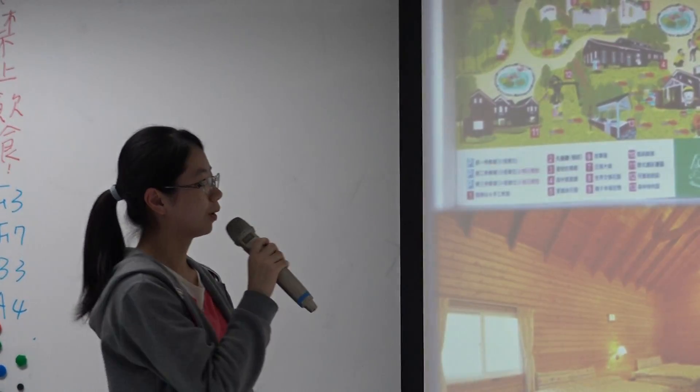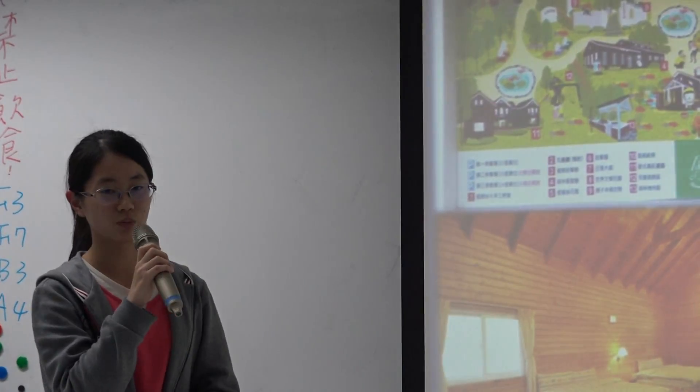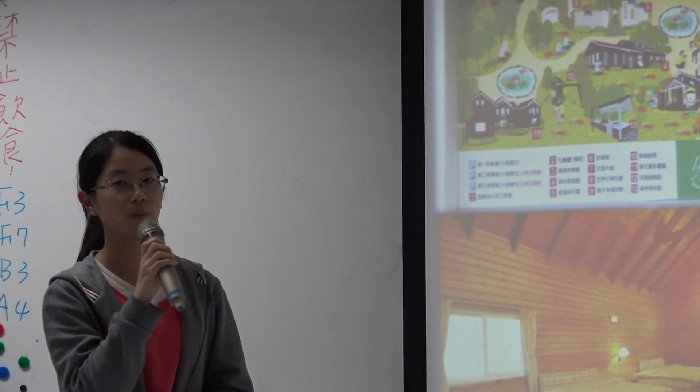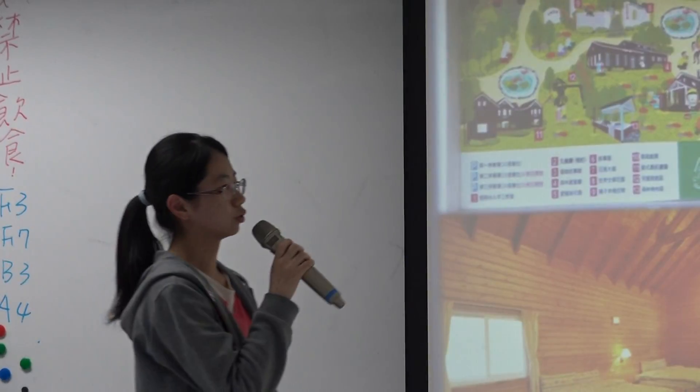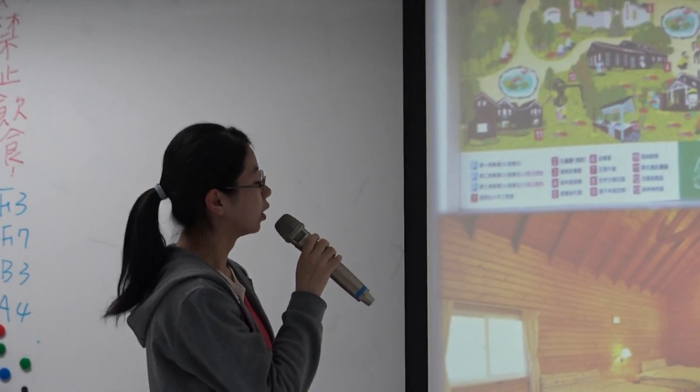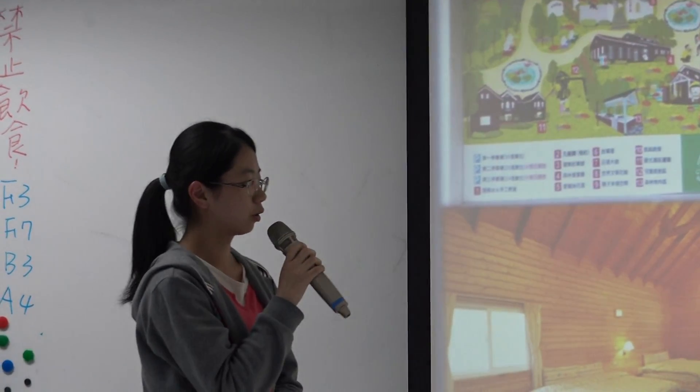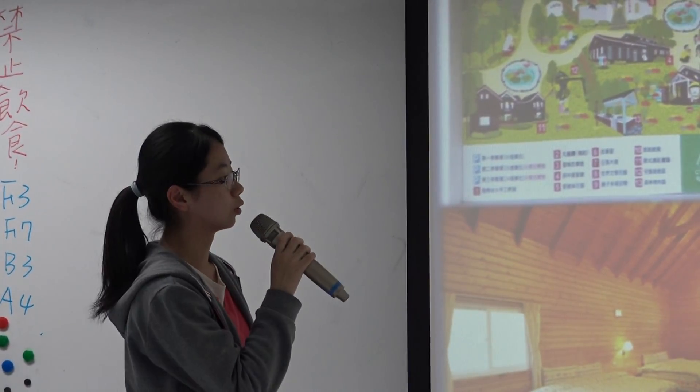And about accommodation places, the places we choose are suitable for both parents and children. Like in day one, in Daxi He'an Senlin Nongzhuang. And this is a garden, and we can play and sleep here. And in day three, we can sleep in the cabin in Dongshi Limchang.